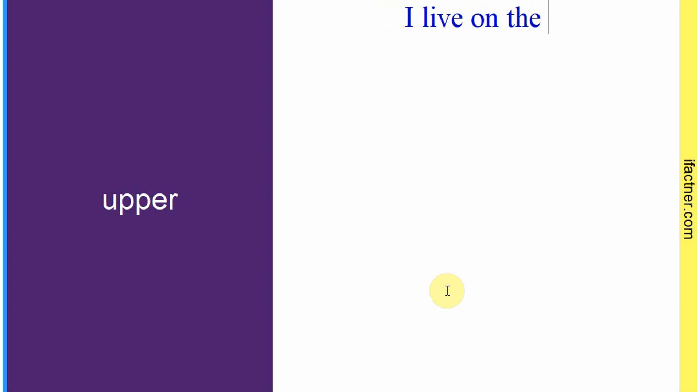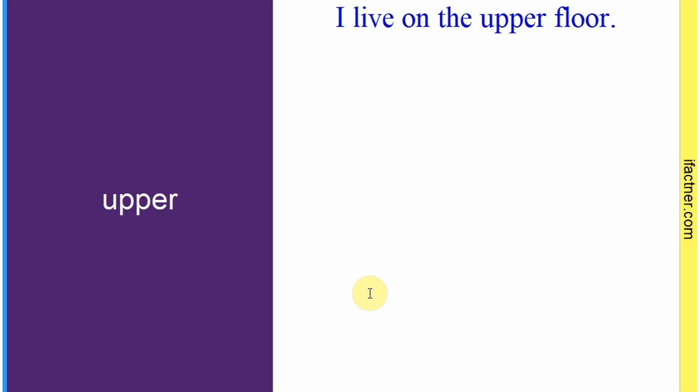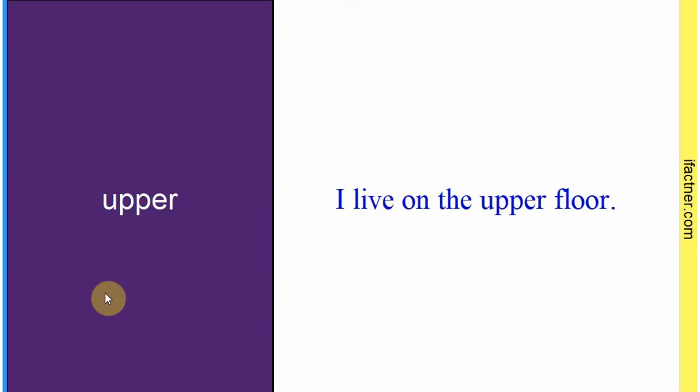Word hai: 'upper'. Sentence banaate hain meaning samajhne ke liye: 'I live on the upper floor.' Mein upar ke floor pe rehta hoon. 'Up' se 'upper' — yaani ek level upar, us se zyada upar. 'Upper' ka matlab hai 'us se upar'. Sentence banaaya: 'I live on the upper floor.'